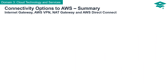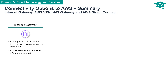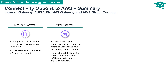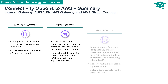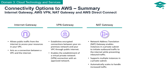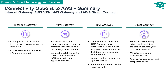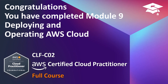To summarize the connectivity options: Internet Gateway enables public traffic access to your VPC resources. VPN Gateway establishes encrypted connections from on-premises to VPC via the public Internet. NAT Gateway empowers private subnet instances to initiate outbound traffic, auto-scales for increased traffic, ensuring secure connectivity. Direct Connect establishes a private, dedicated fiber connection to your data center, addressing latency and bandwidth concerns and meeting high regulatory and compliance needs. Congratulations — you have completed Module 9, Deploying and Operating AWS Cloud.